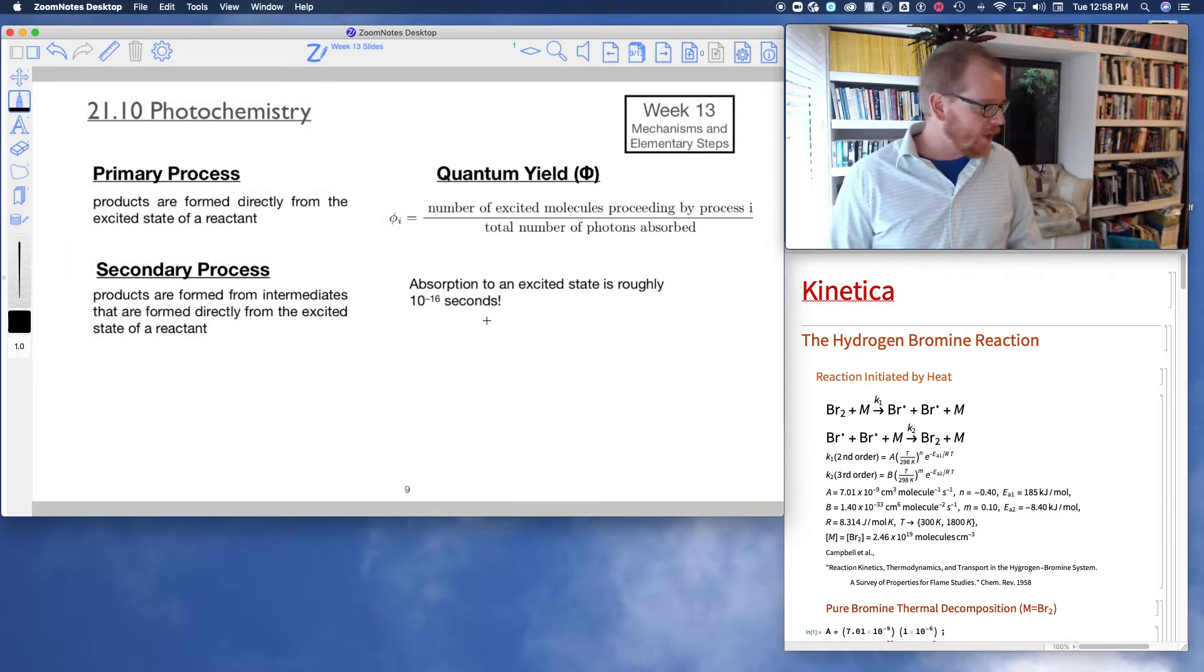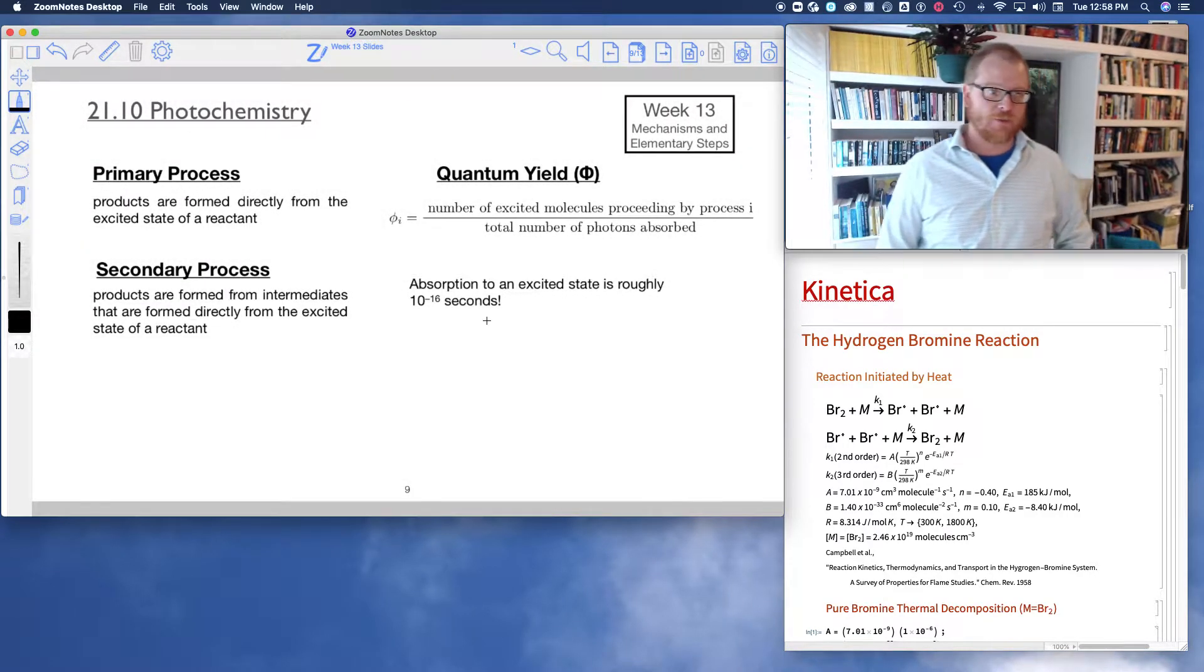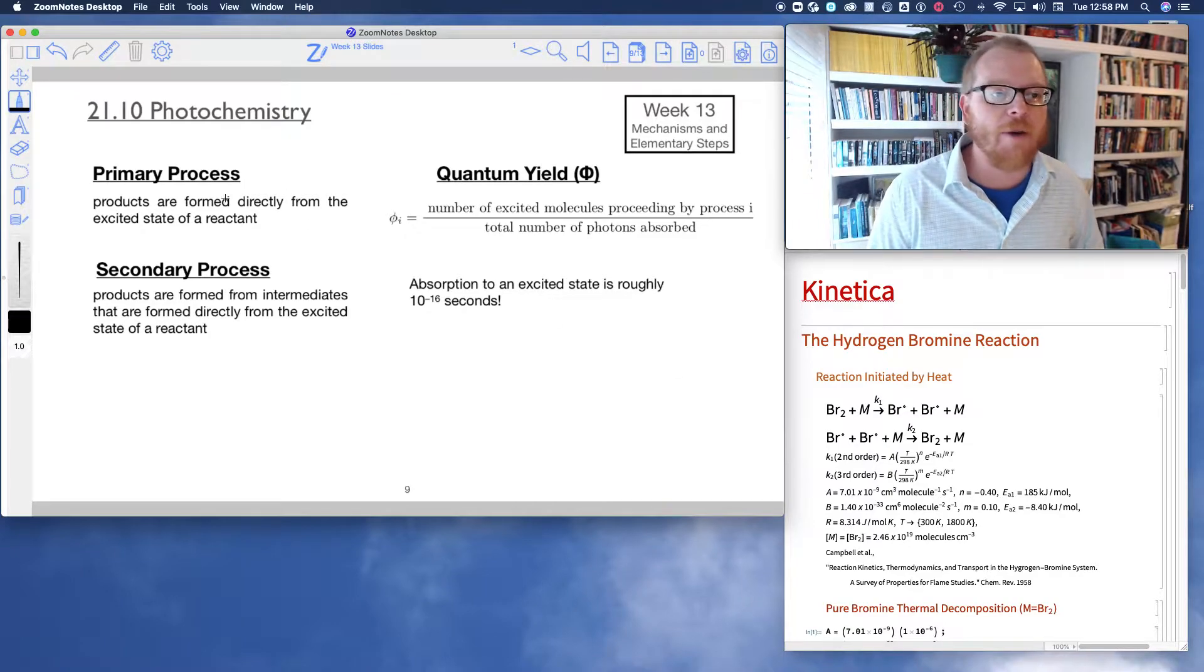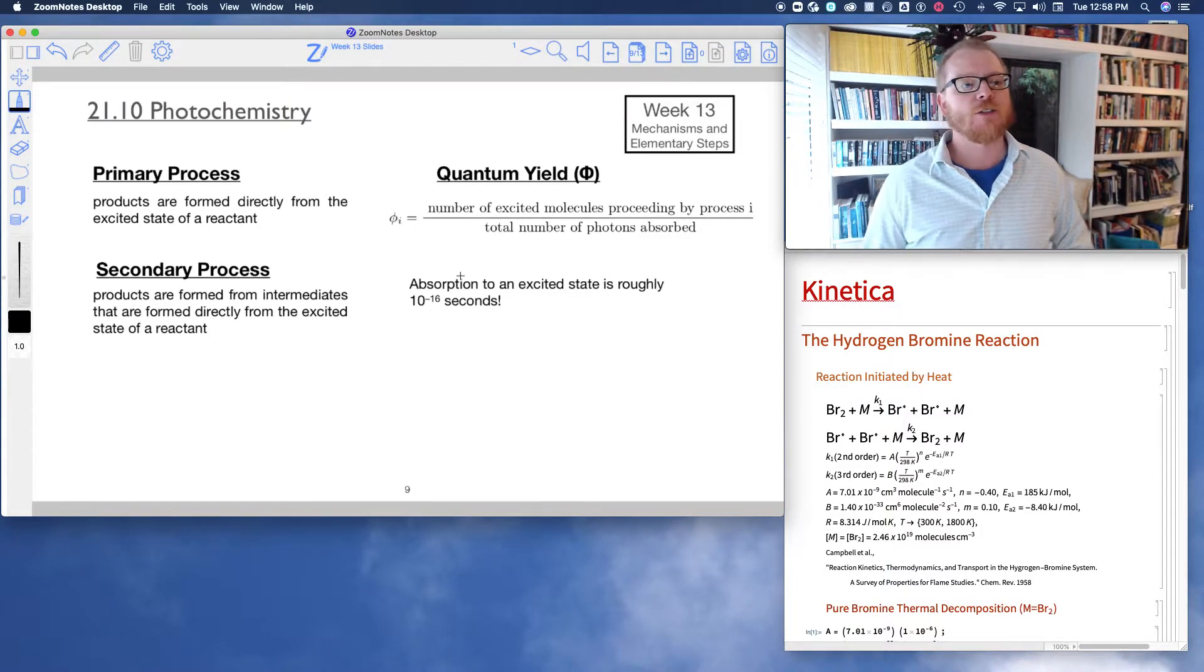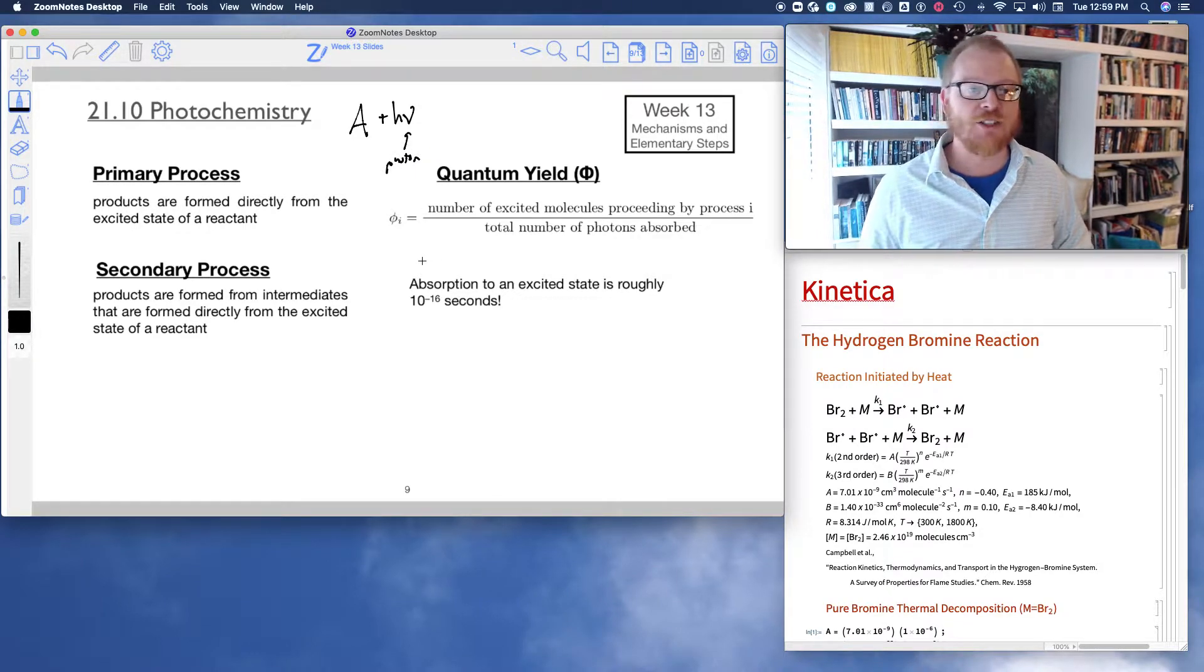So moving along, let's talk about some definitions. There are primary processes from photochemistry, so that's where products are formed directly from the excited state of a reactant. We consider the very first step in any photochemical reaction is A plus H nu—remember that's the symbol for photon.